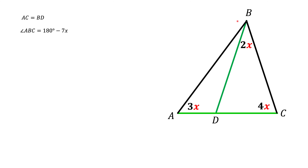First of all, the big angle B — angle ABC — equals 180 minus these two angles, which gives 180 minus 7x. The second angle we will need is angle D, or BDC. That angle will be 180 minus these two angles, giving 180 minus 6x.